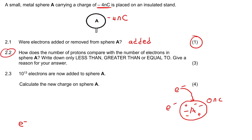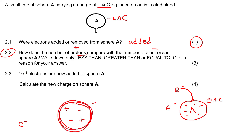Then it says: how does the number of protons, which are the positive things, compare with the number of electrons, which are negative, in sphere A? Write down less than or greater than and give a reason. When you have equal numbers of protons and electrons, your overall charge would equal zero, because your positives and negatives are the same and balance out.